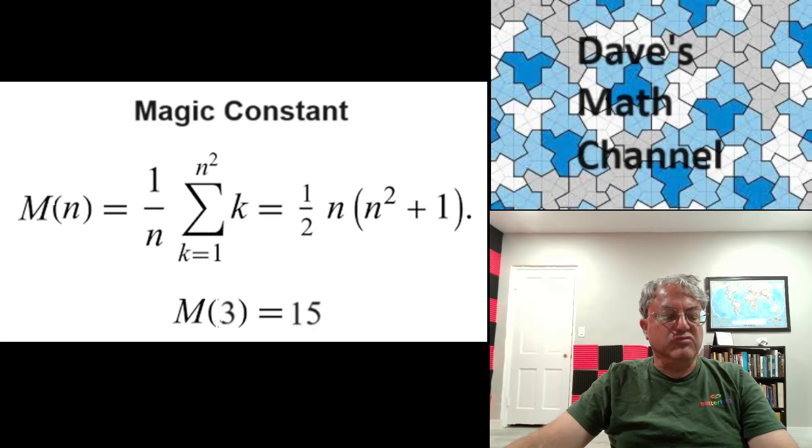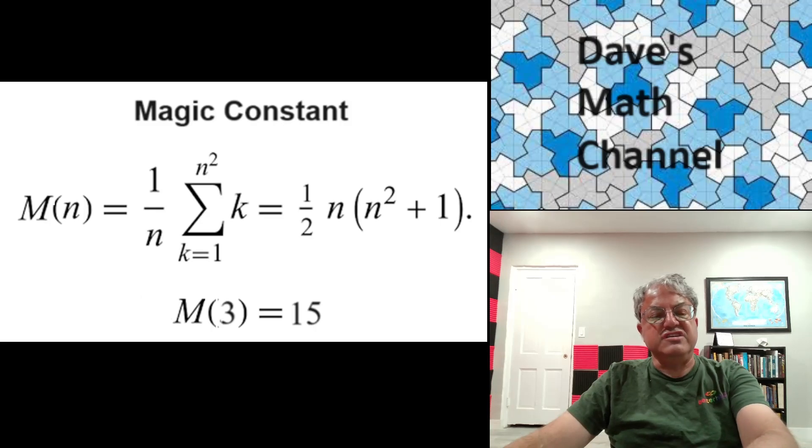But now we're dividing by n because remember that there's n rows and n columns. So each row or each column has to add up to the Magic Constant, which is the sum of all the squares divided by n, which is 1/2 n times (n squared + 1). Voila. And for n equals 3, that turns out to be equal to 15. So a normal Magic Square of order 3 has to have Magic Constant 15.